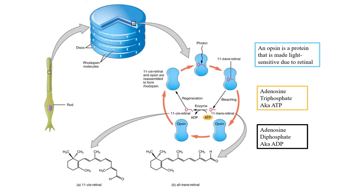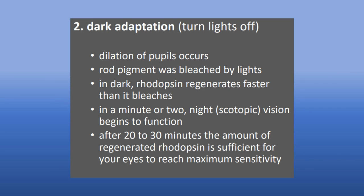Using ATP, all-trans retinal is regenerated into 11-cis retinal, with ADP as a byproduct. With 11-cis retinal regenerated, it is reassembled with opsin to reform rhodopsin. Ultimately, rhodopsin in the dark regenerates faster than it bleaches because there are fewer changes in brightness in the dark. This allows humans to gain night vision, better known as scotopic vision.